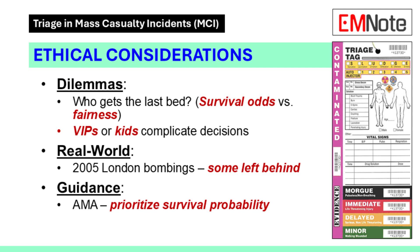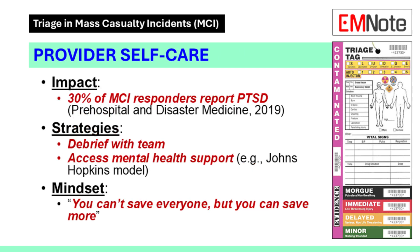For you, practice matters — run MCI drills with your team, know your hospital's disaster plan and who's in charge. Chaos is guaranteed, so adapt. MCIs force tough calls: who gets the last bed? Age, injury severity, or first come first served? There's no perfect answer. The American Medical Association says prioritize survival odds, but VIPs or kids can complicate it. In the 2005 London bombings, medics faced this — some patients got left behind. It's not personal; it's math. These events scar providers. A 2019 study in Prehospital and Disaster Medicine found 30% of MCI responders reported PTSD symptoms. Debrief with your team, talk it out. Hospitals like Johns Hopkins now mandate post-disaster counseling. You can't save everyone, but with a plan, you save more. Protect your headspace too.